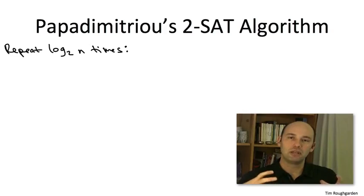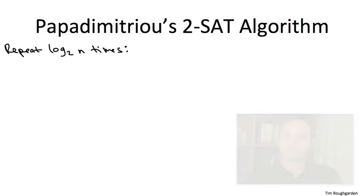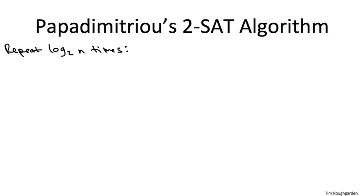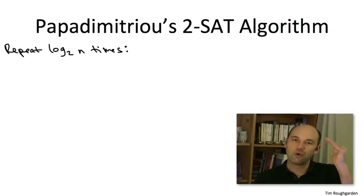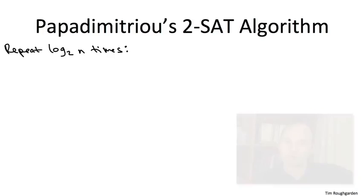The meat of the algorithm is in the inner loop. That has some probability of finding a satisfying assignment, and then we just run that basic subroutine a bunch of times, hoping that one of the trials will find us a satisfying assignment. So conceptually, you should just focus on a fixed iteration of this outer for loop. They're all exactly the same, just using different sets of random coins.